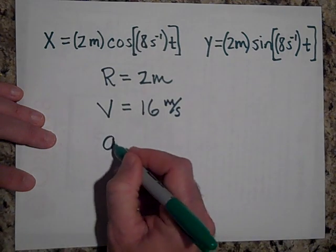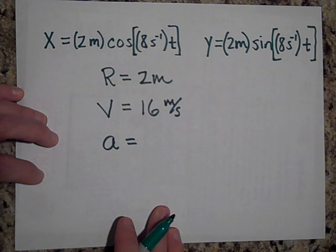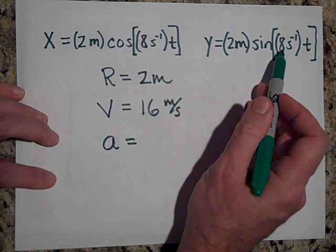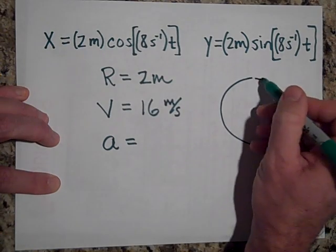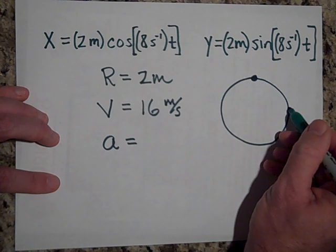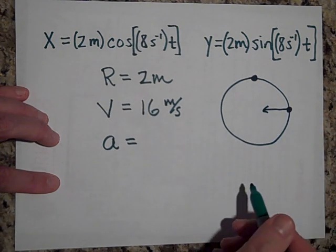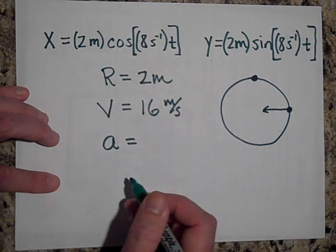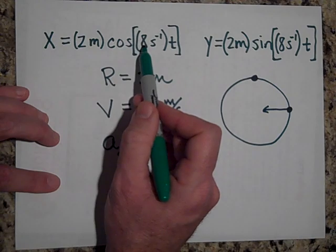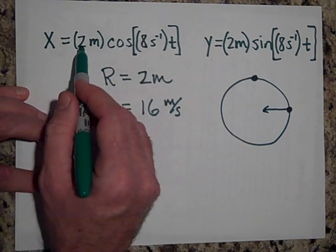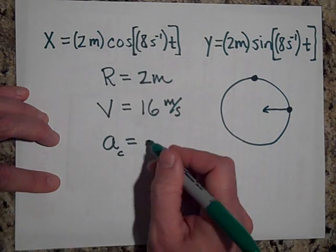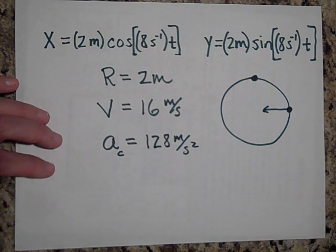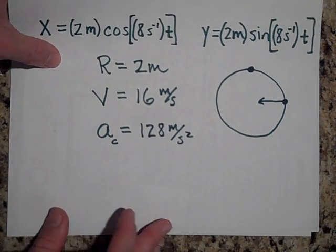Can you tell me what the acceleration of this object moving in circular motion would be? When it's maxed out in the x-direction, acceleration in y is zero, so the maximum acceleration in y equals the centripetal acceleration. The centripetal acceleration is Aω², so 2 times 8 squared: 64 times 2 is 128 meters per second squared. That is the centripetal acceleration of this object.